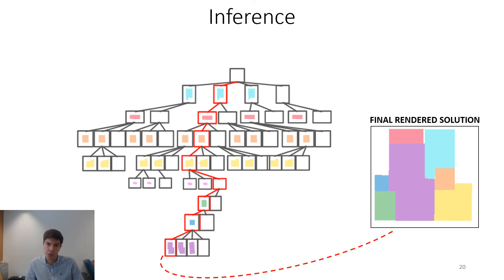After the desired number of iterations, we perform inference by simply traversing the tree from the root to the leaf, selecting nodes with high scores along the path.